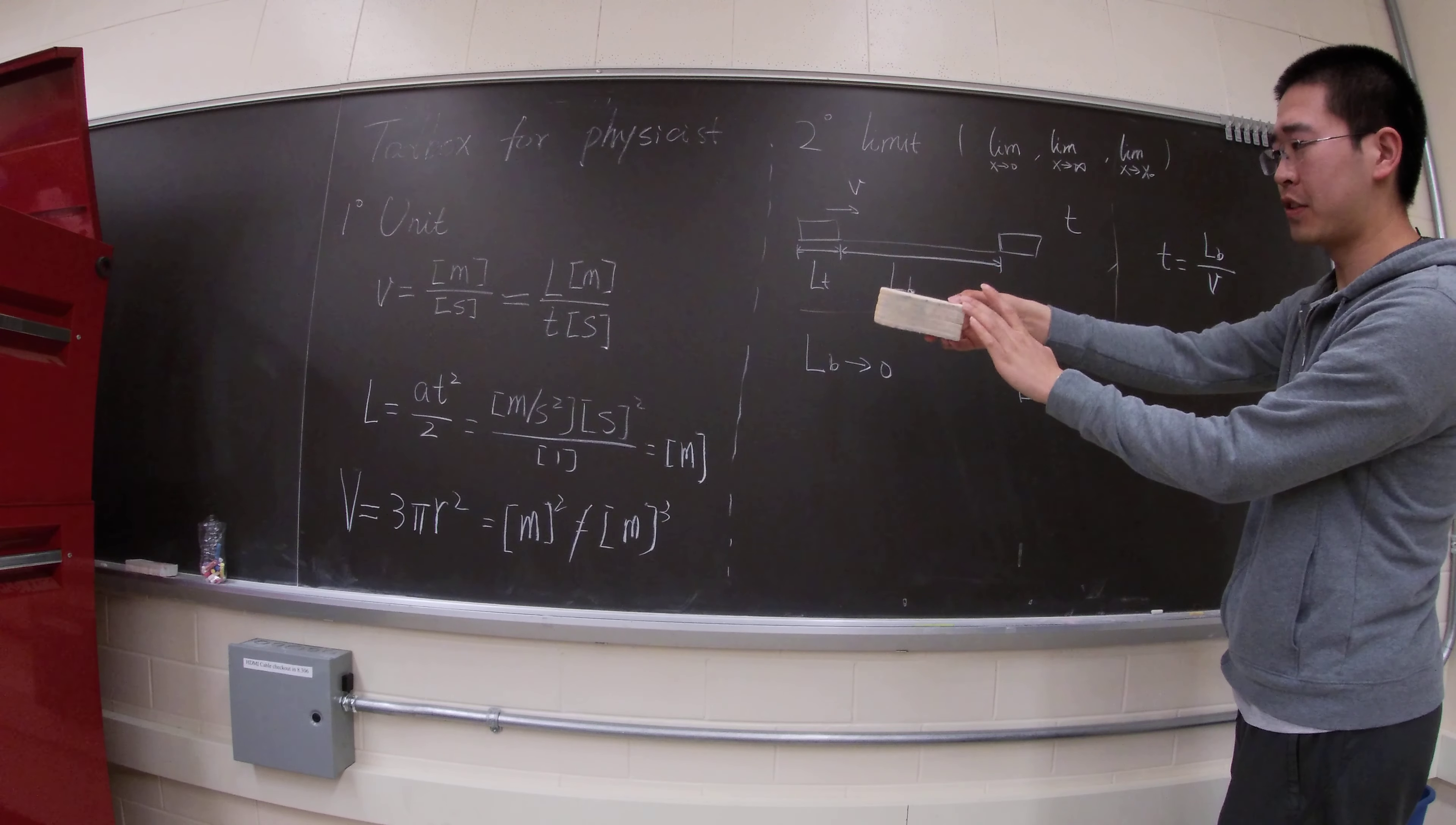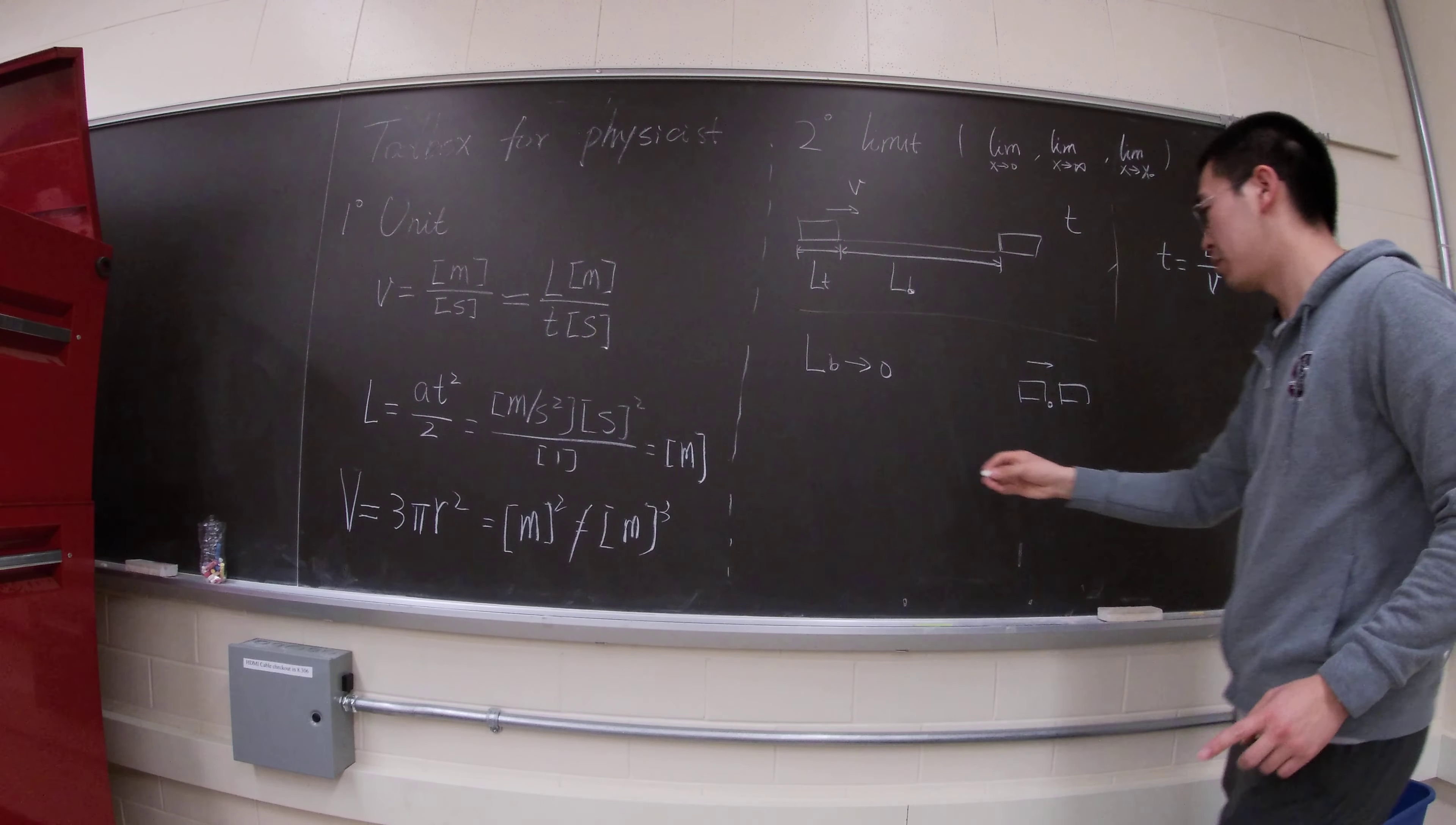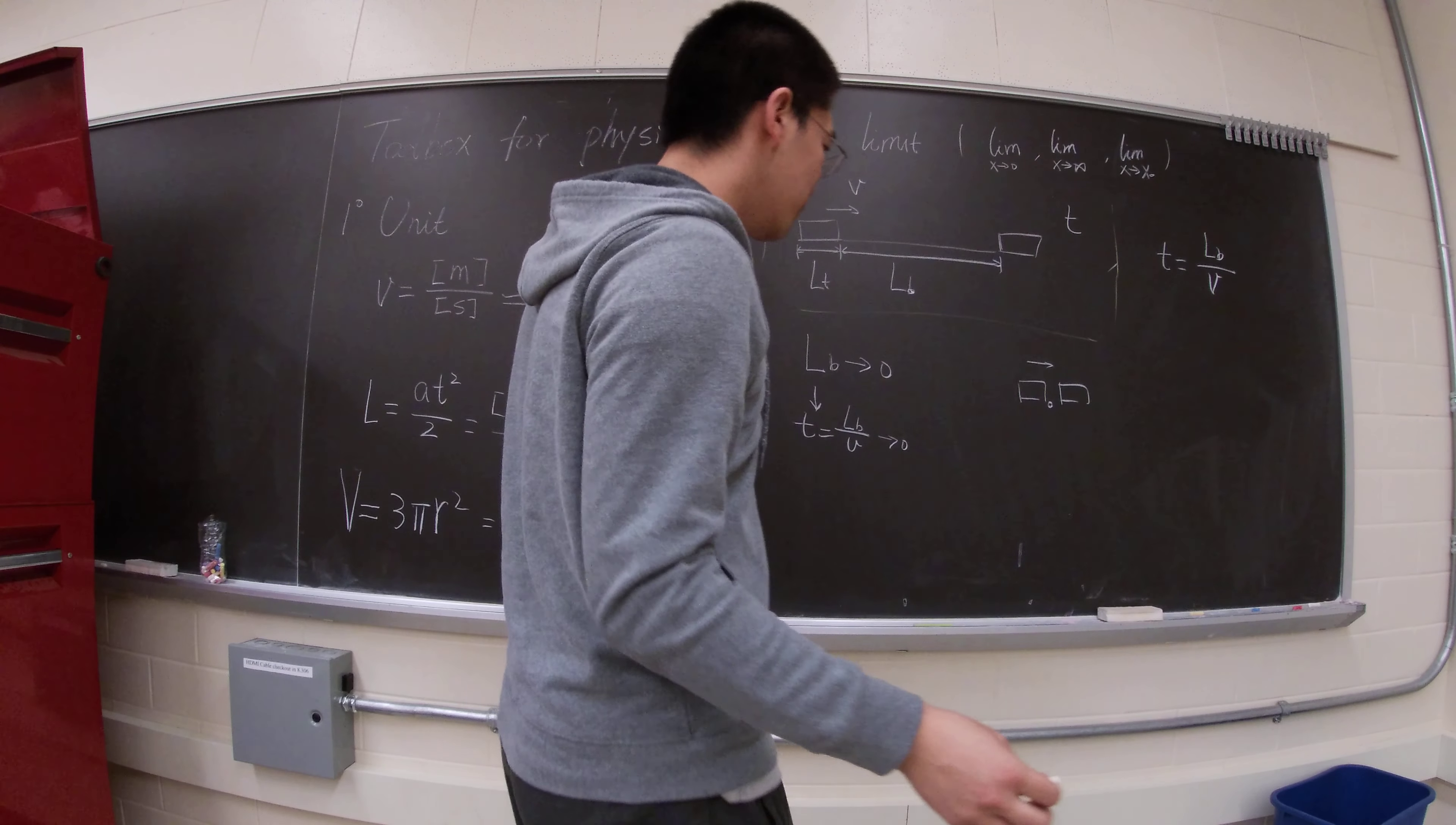So the train, for instance, this is the train. The train has to go from here to here. But the velocity of the train is finite, then this expression won't make sense. Because if the length of the bridge goes to zero, then the time will go to zero. Since T equals to LB over V that you derive, this will go to zero, which doesn't make sense at all.